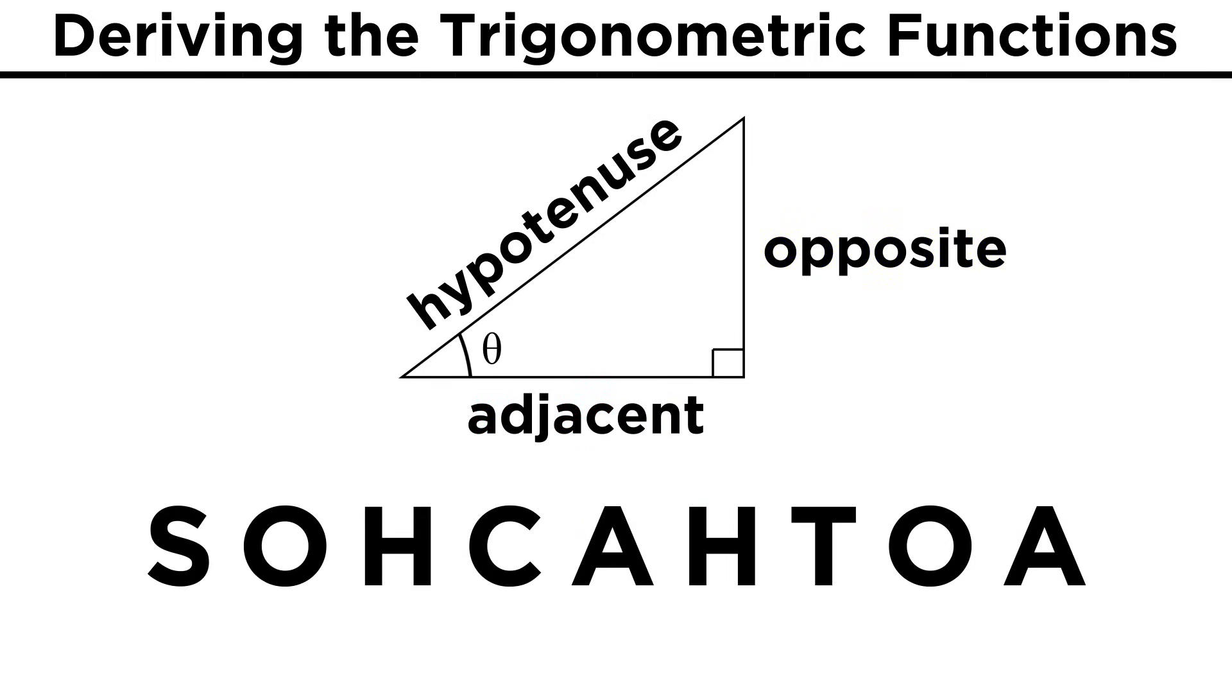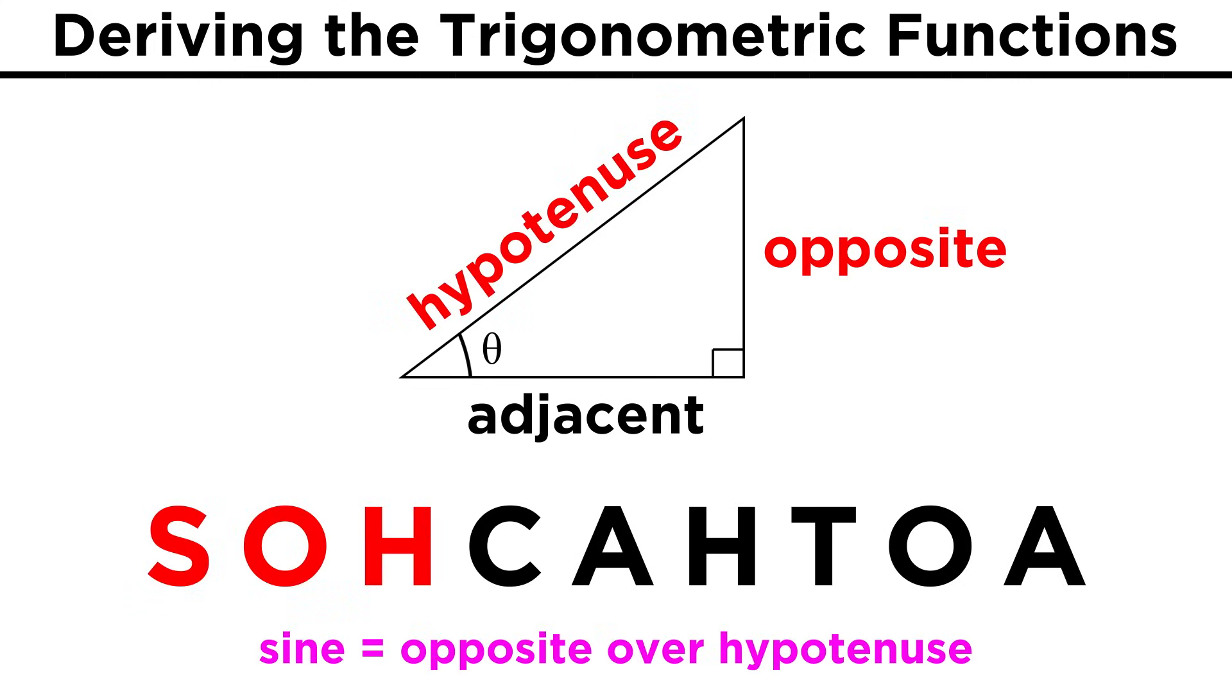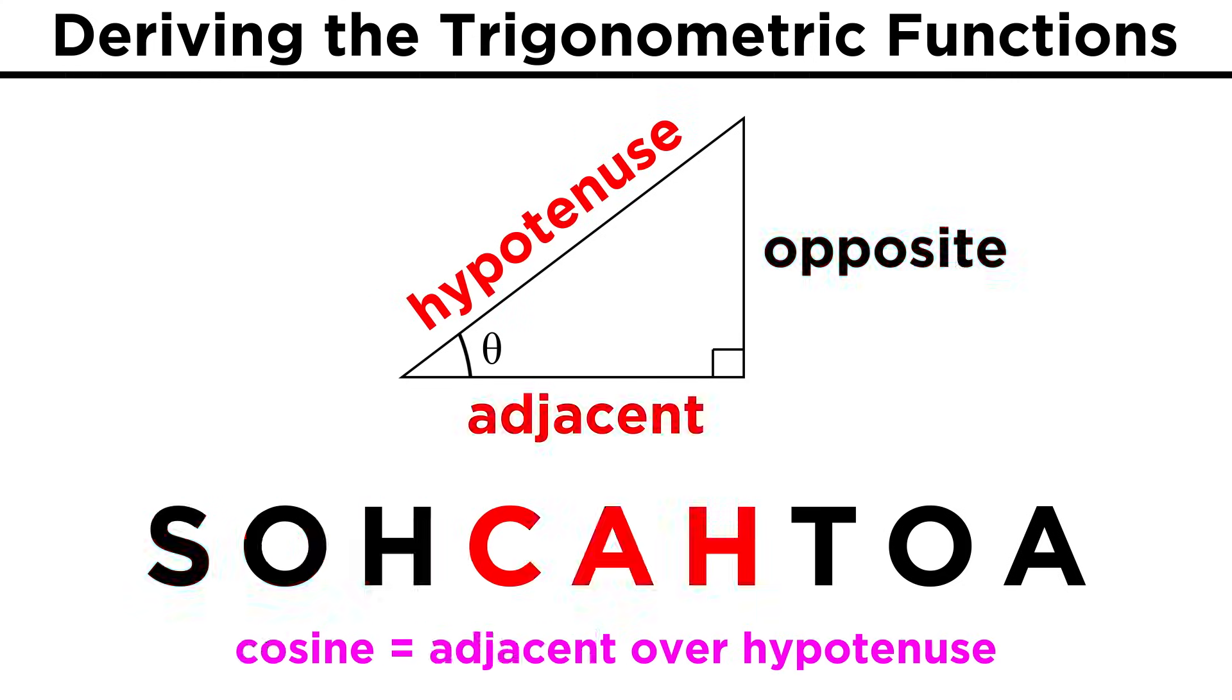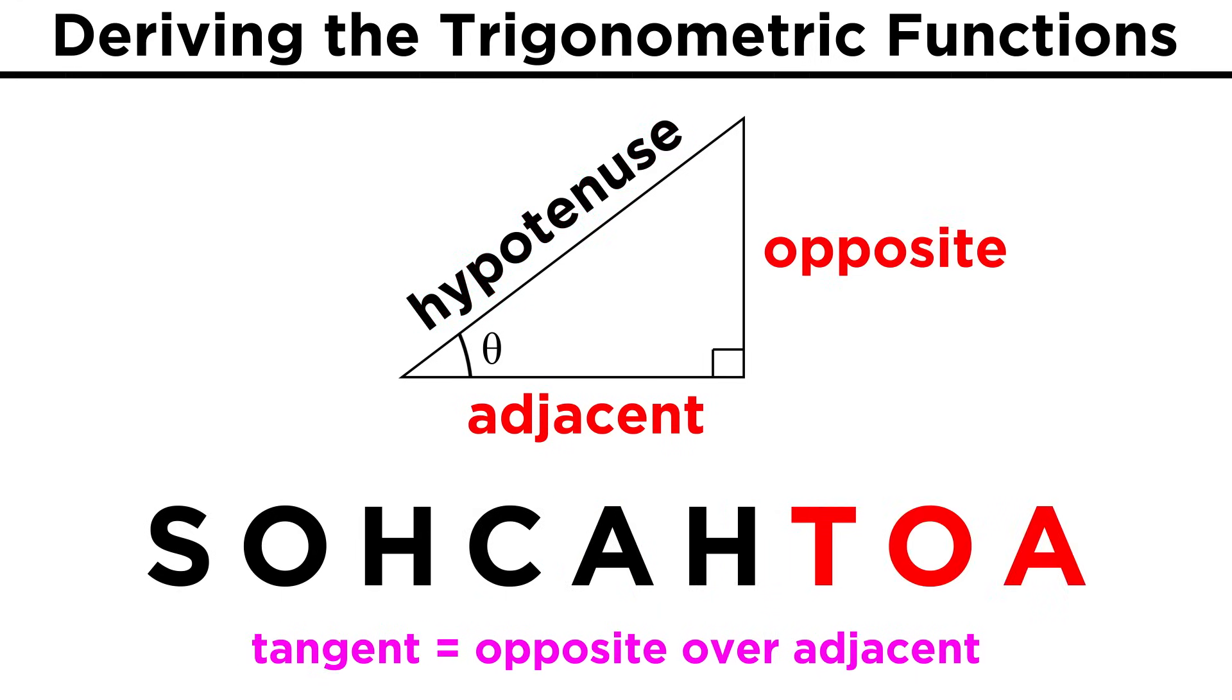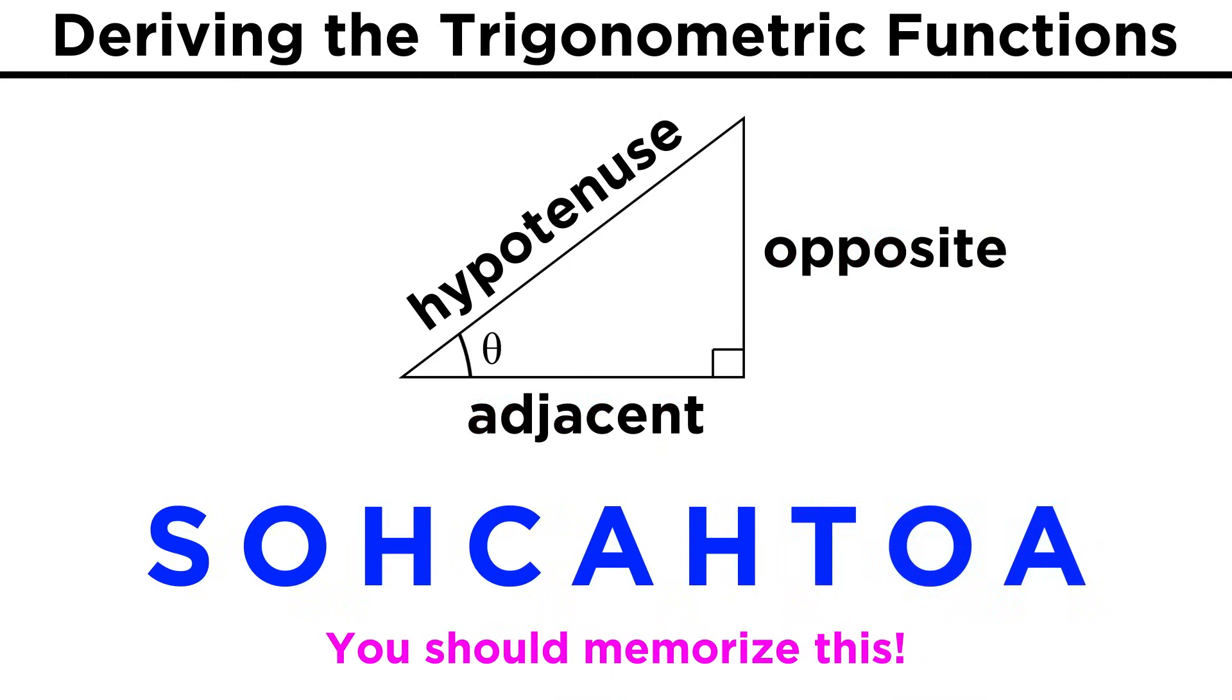We can remember these definitions using the mnemonic SOHCAHTOA. These letters stand for sine, opposite over hypotenuse, and then cosine, adjacent over hypotenuse, and lastly tangent, opposite over adjacent. Say it with me one more time, SOHCAHTOA.